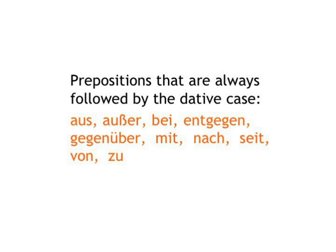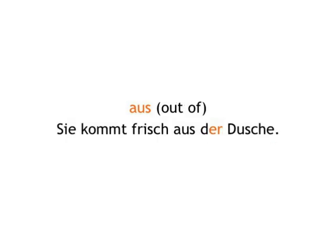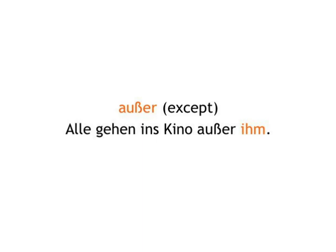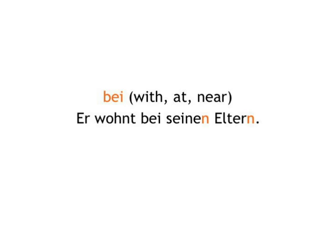Aus — out of: Sie kommt frisch aus der Dusche. She's just got out of the shower. Außer — except: Alle gehen ins Kino außer ihm. Everyone's going to the cinema except him. Bei — with, at, near: Er wohnt bei seinen Eltern. He lives with his parents.